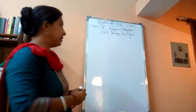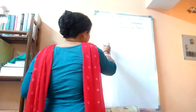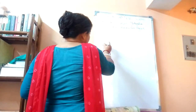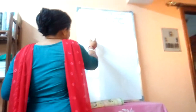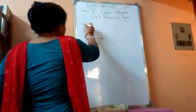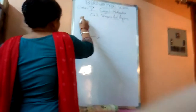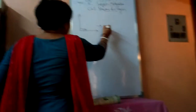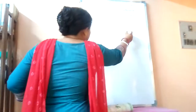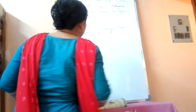The first angle is when you are joining two rays like this, and the measurement is 90 degrees. This is called a right angle — a right angle whose measurement is 90 degrees.